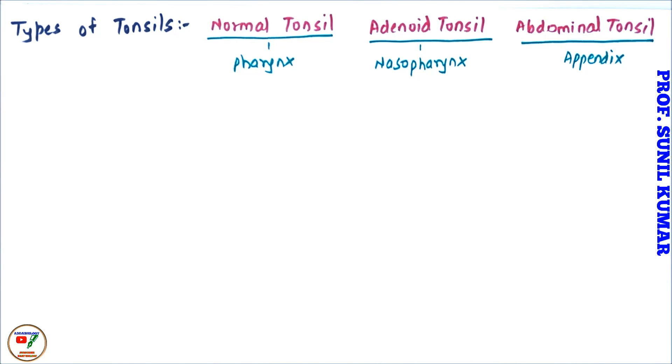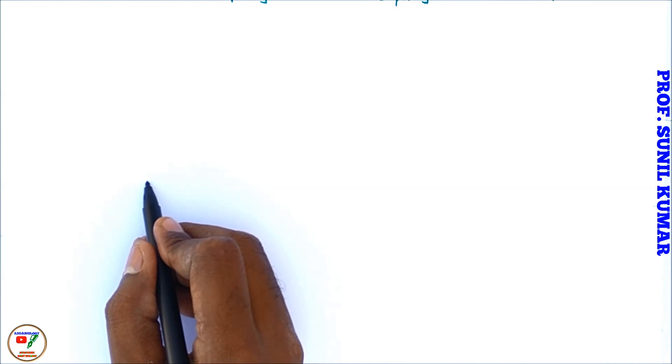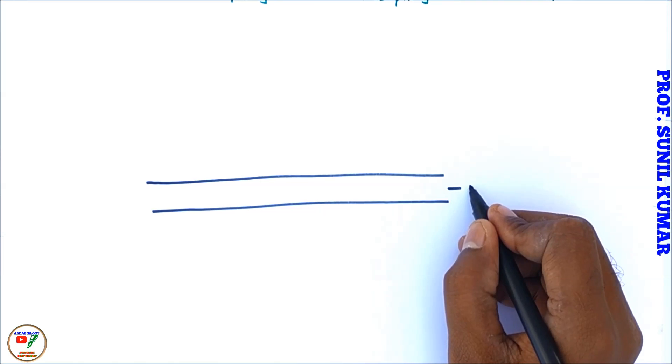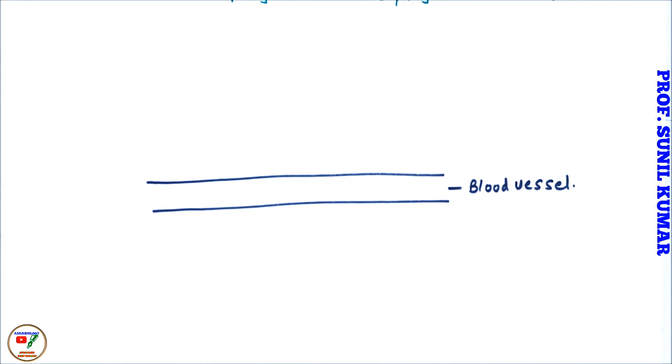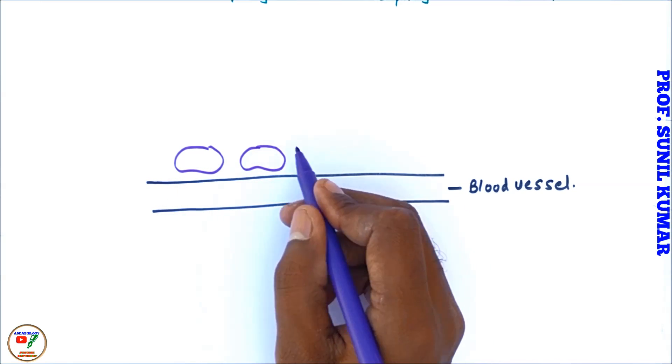Now coming to the most important part: the lymphatic system diagram. Follow the steps very carefully, you will understand very clearly how the lymphatic system works. So let us take this to be the blood vessel.